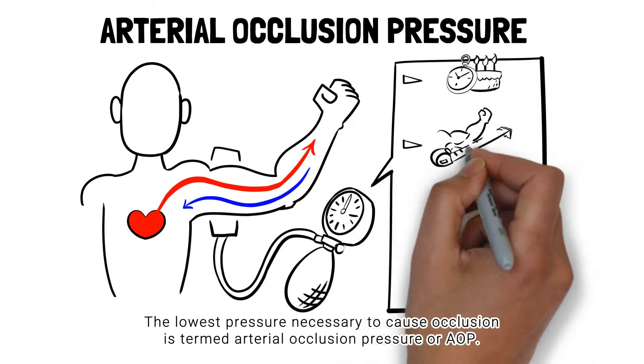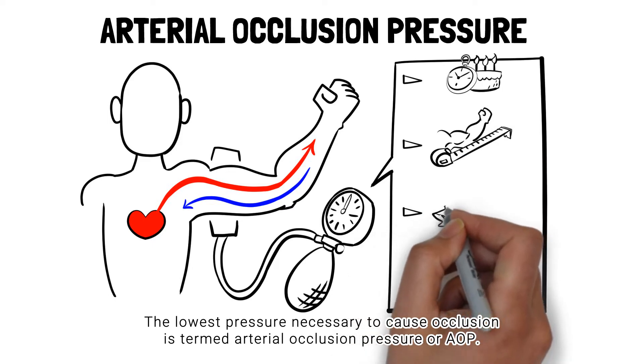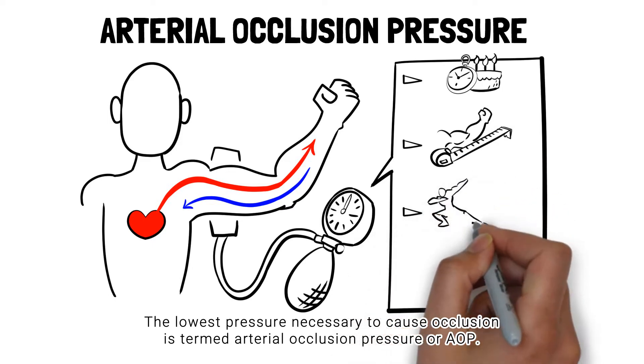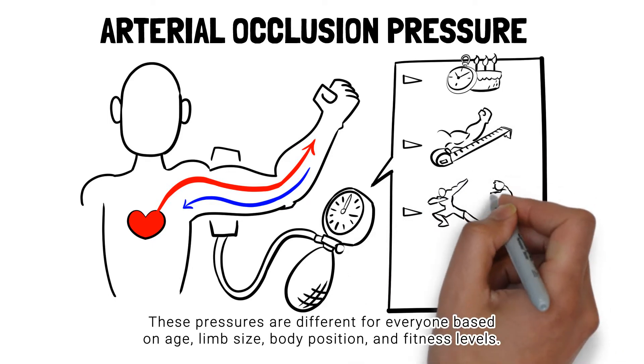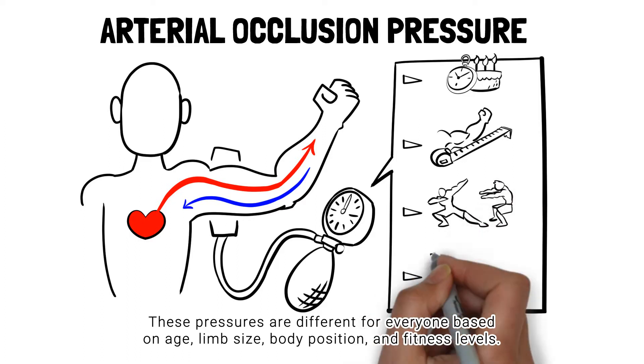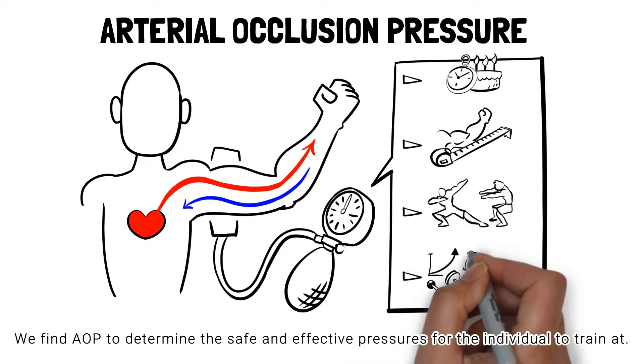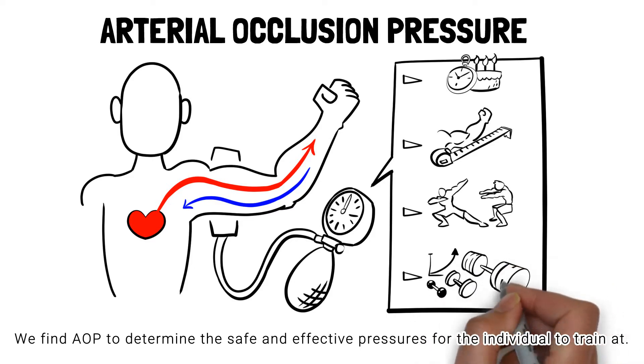The lowest pressure necessary to cause occlusion is termed arterial occlusion pressure, or AOP. These pressures are different for everyone based on age, limb size, body position, and fitness levels. We find AOP to determine the safe and effective procedures for the individual to train at.